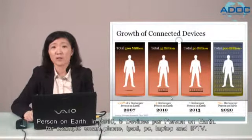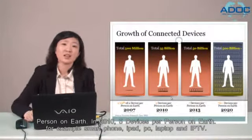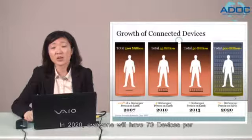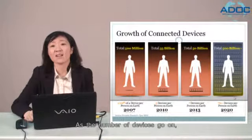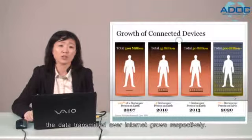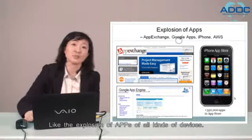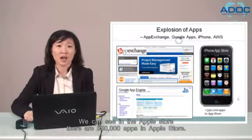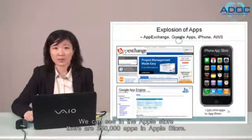For example, smartphone, iPad, PC, laptop, and IPTV. In 2020, in prediction, everyone will have 70 devices per person on Earth. As the number of devices grows, the data transmitted over the internet grows respectively. Like the explosion of apps for all kinds of devices — we can see in the Apple Store there are 350,000 apps.